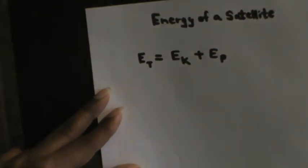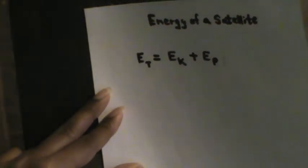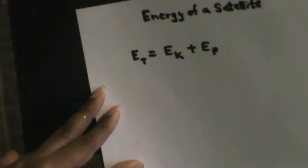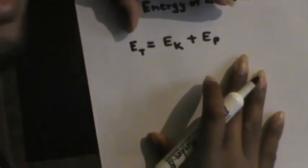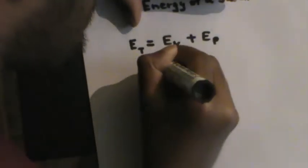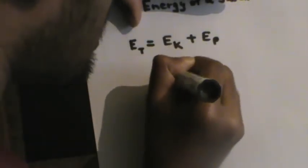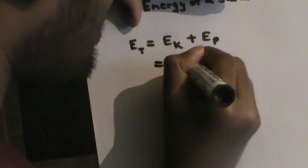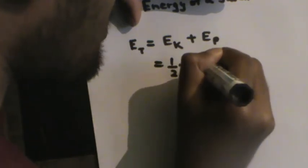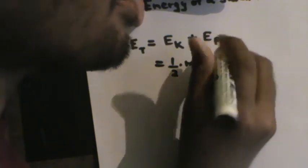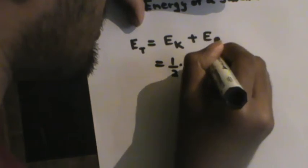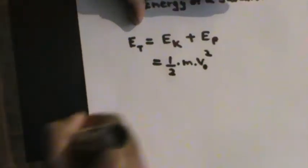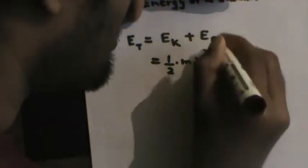From the theories we have learned so far in my series of videos on gravity, we can derive a simple equation. The kinetic energy of the satellite: we know that Ek is equal to half times its mass M times the square of the velocity. I will take the orbital velocity, as in the last video, to be V₀, so it will be V₀ squared.